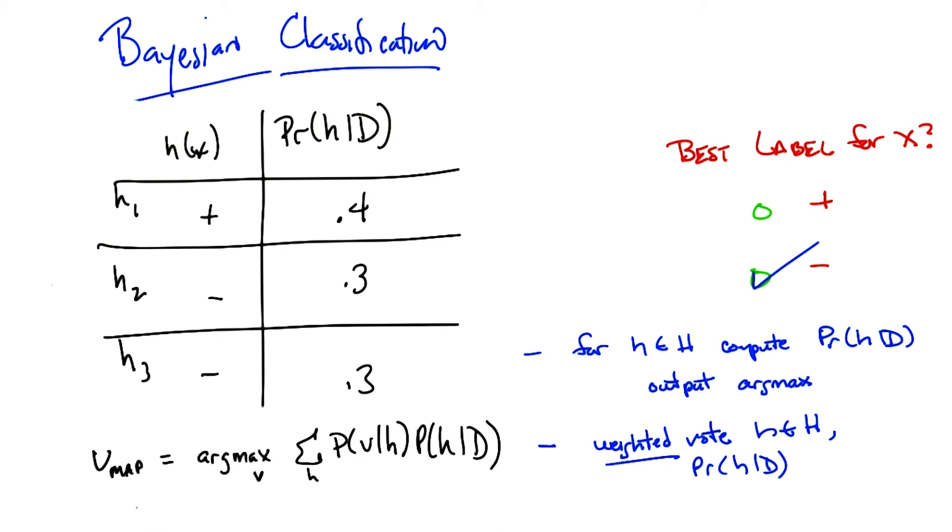Basically, the most likely value is the one that maximizes this expression. And this follows directly from Bayes' rule, where now instead of trying to maximize the hypothesis given the data, you're trying to maximize the value given the data. And I think it's pretty straightforward to derive that, but I'd like to leave it up to the students to do it on their own.